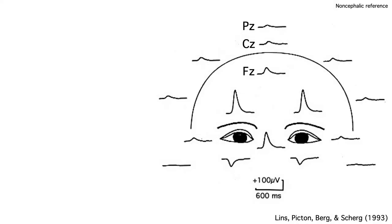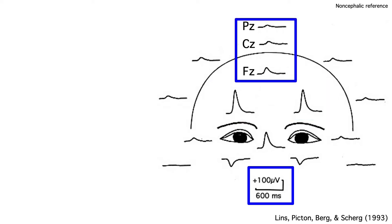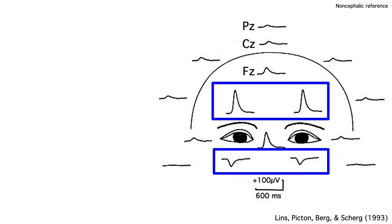Here's what the distribution of voltage looks like for an eye blink. If you look at the scale, you'll see that the voltage deflection is a couple hundred microvolts right above the eyes, and you can easily have 20 to 40 microvolts at sites like Fc, Cz, and Pz. Notice how the voltage is negative under the eyes and positive over the eyes.